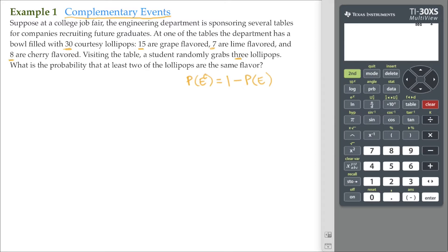Now the key here is, it says, what is the probability that at least two of the lollipops are the same flavor? So I'm going to demonstrate at least two of the same flavor with a sample space here.